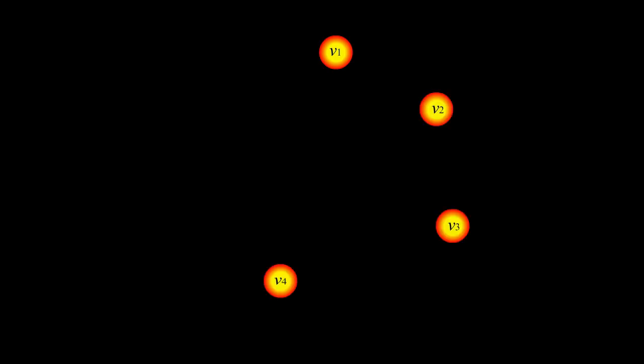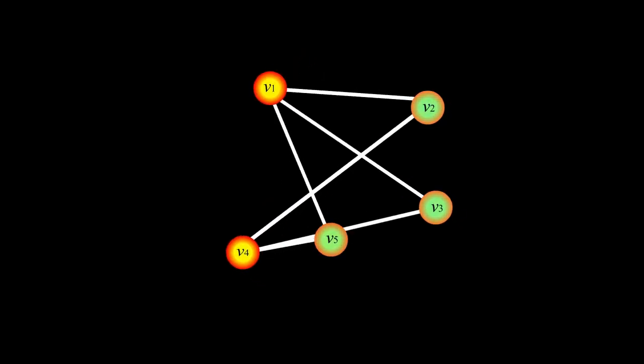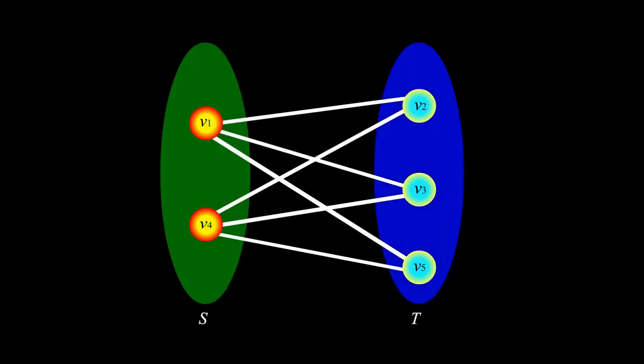Another example — here are the vertices and here are the edges, and we can redraw this graph. We have two vertices on the left and three vertices on the right, and each vertex on the left is adjacent to each vertex on the right. This is another example of a special bipartite graph called a complete bipartite graph.